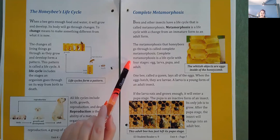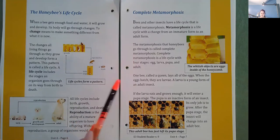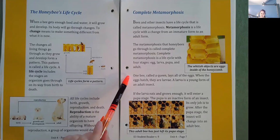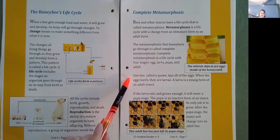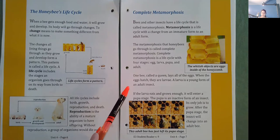Egg, larva, pupa, and adult. One bee called a queen lays all of the eggs. When the eggs hatch, they are larvae. A larva is a young form of an adult insect.